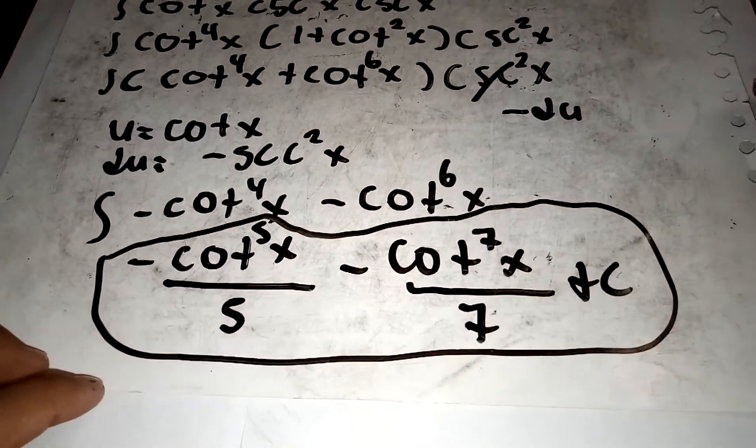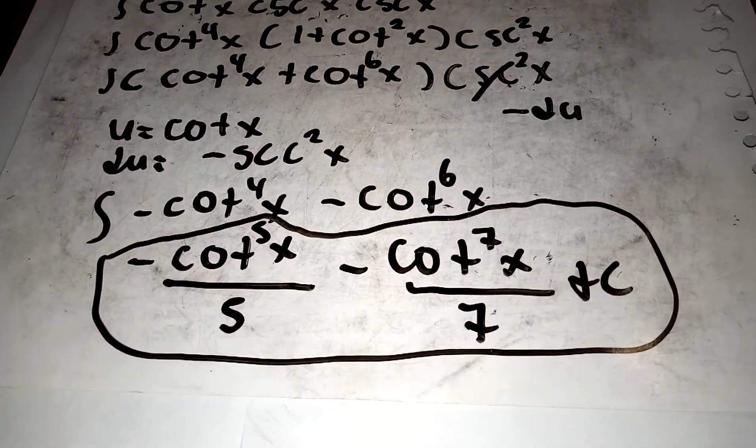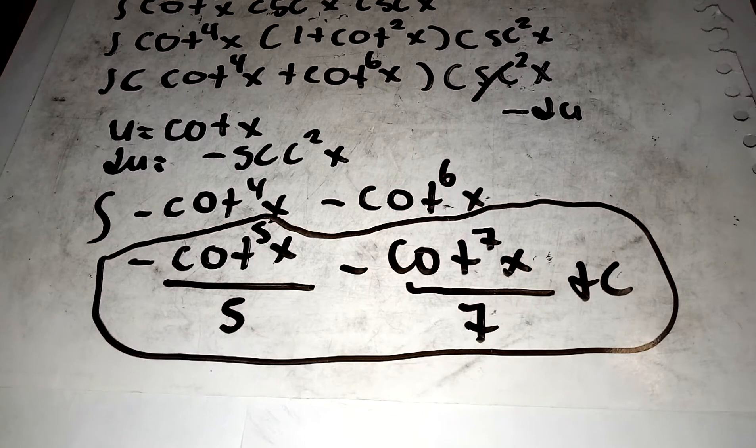So our final answer is: negative cotangent to the fifth x all over 5, minus cotangent raised to the seventh x all over 7, plus C.